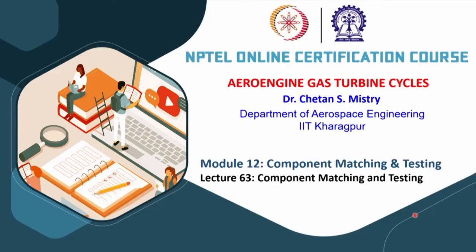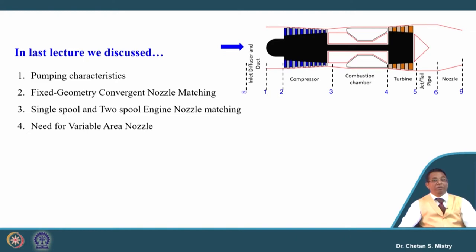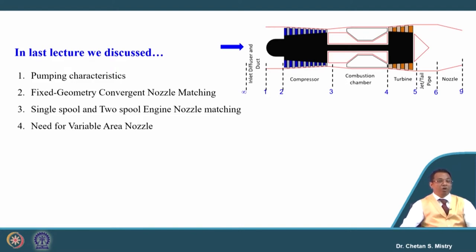Hello and welcome to lecture 63. We are discussing about component matching and testing. In the last lecture we discussed about the pumping characteristics for the turbine, which gives information on how to match the overall engine both in terms of performance and operating parameters. We also discussed about the fixed geometry convergent nozzle and how the exit conditions — specifically the expansion ratio of the turbine — decide the rotational speed and compressor power requirement.